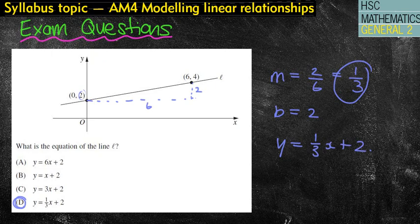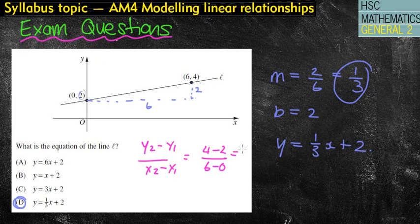Likewise you could have used the formula if you knew it, y2 minus y1 over x2 minus x1, which would give you 4 take away 2 over 6 take away 0, which is 2 over 6 which is 1 third as well. But D is your answer for that one.